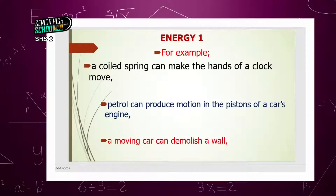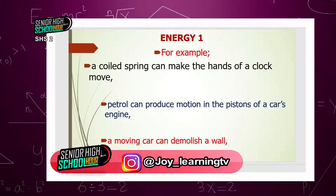Whatever will give that enablement — that ability — that's energy. For example, a coil spring can make the hands of the clock move. Because the coil spring can cause movement of the hand of the clock, energy is involved. Most cars run on diesel or petrol, or these days we have electric cars. You fuel in some petrol, it burns in the engine, helping the pistons move, which helps the car to move. That petrol has energy, giving the ability to do work.